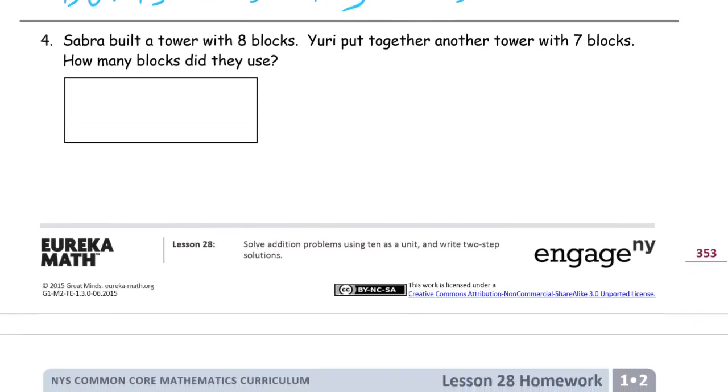Sabra built a tower with 8 blocks. Yuri put together another tower with 7 blocks. How many blocks did they use? Well, we've got Sara's 8 plus Yuri's 7 equals, right? 8 needs a 2. The other part of 7 will be 5. So 10, right? Here's your 10. 5, 15.